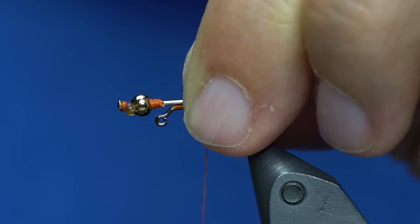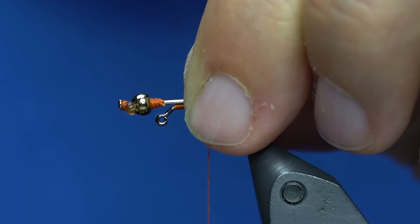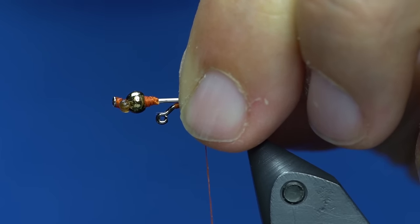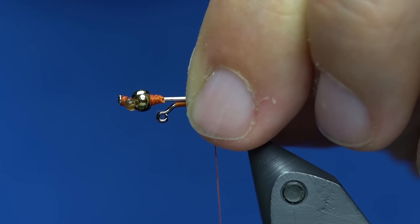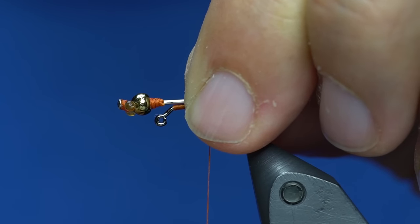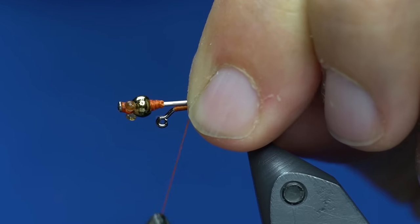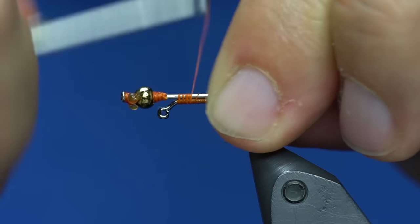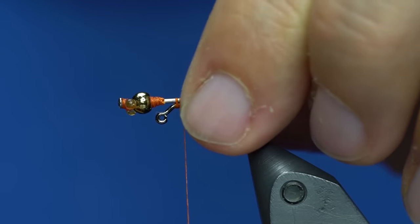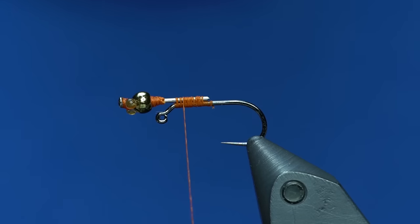I usually do these in two versions. This is the 3.3 millimeter version. You can also do it in 2.8 bead size. The smaller the bead, obviously on the 2.8 you're going to want it out a little further so it'll balance.